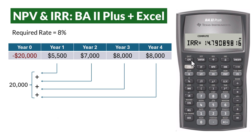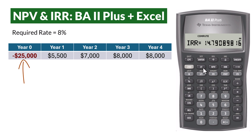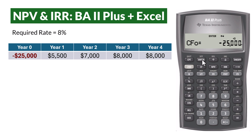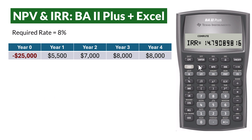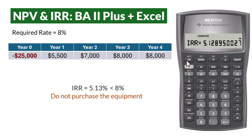Now suppose the equipment was purchased for $25,000. Press the CF button and change CFO to $25,000, making it negative. Press the NPV button, leave I at 8, scroll down, and Compute NPV. We see that the NPV is now negative, indicating that the equipment should not be purchased. Press IRR and Compute — the IRR is now about 5%, which is less than the required rate of return of 8%, also indicating that the equipment should not be purchased for $25,000.